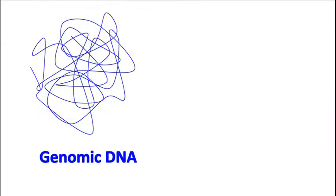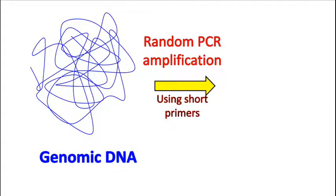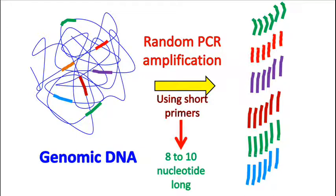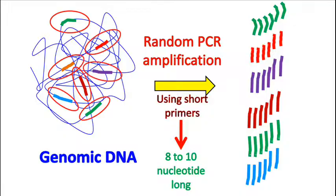The genomic DNA is first isolated and subjected to PCR amplification. The PCR amplification is done using short stretches of random primers. These primers are about 8 to 10 nucleotides long and bind to DNA at random locations.